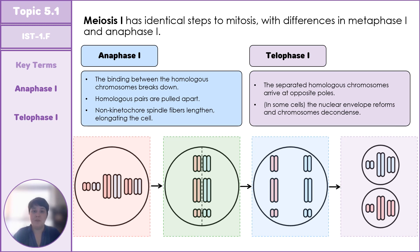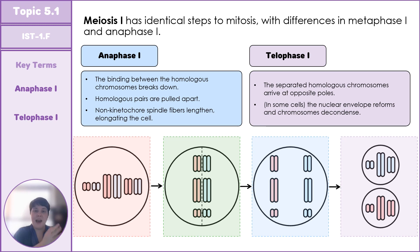If chromosomes do decondense after meiosis I, they will condense back down and lose the nuclear envelope again at the start of meiosis II. At this point we've gone from one diploid parent cell to two haploid daughter cells and are ready to begin meiosis II.